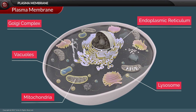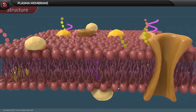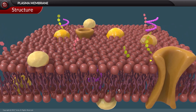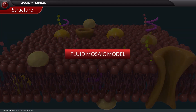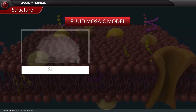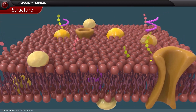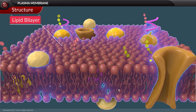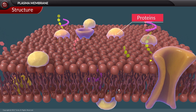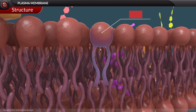The plasma membrane also defines the boundary for organelles in eukaryotic cells, which are termed membrane-bound organelles. The structure of the cell membrane is well explained by the fluid mosaic model, proposed by Singer and Nicholson. According to this model, the plasma membrane is a lipid bilayer in which proteins are embedded in a random fashion.